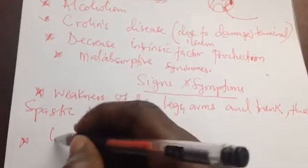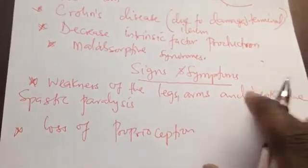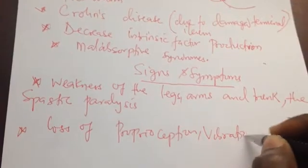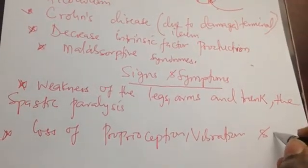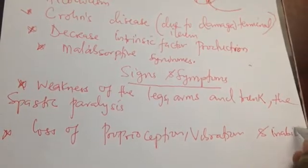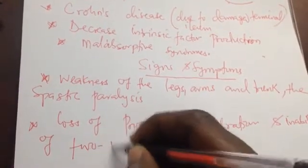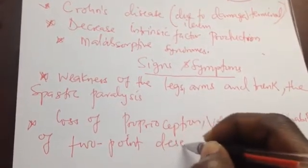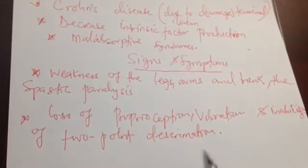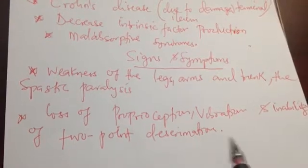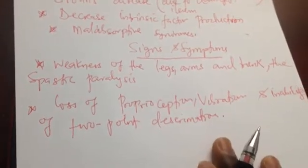Additionally, because the dorsal column medial lemniscus system is affected, there is loss of proprioception, loss of vibration sense, and inability of two-point discrimination. When the dorsal column medial lemniscus fibers are damaged, the patient will suffer from all of these deficits.